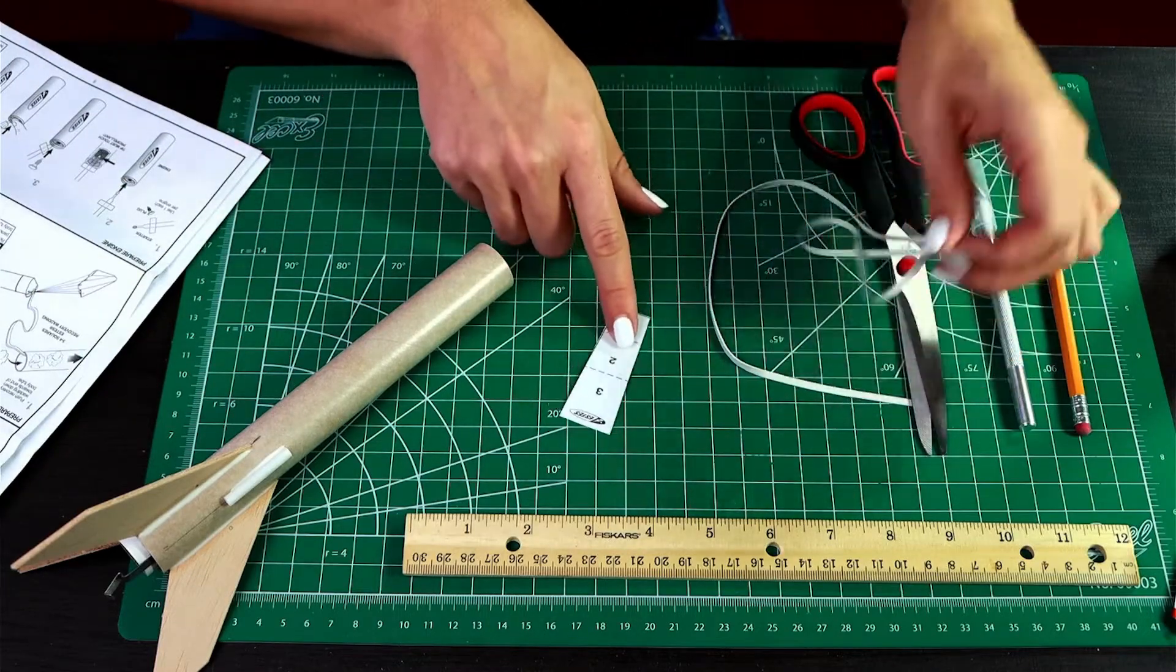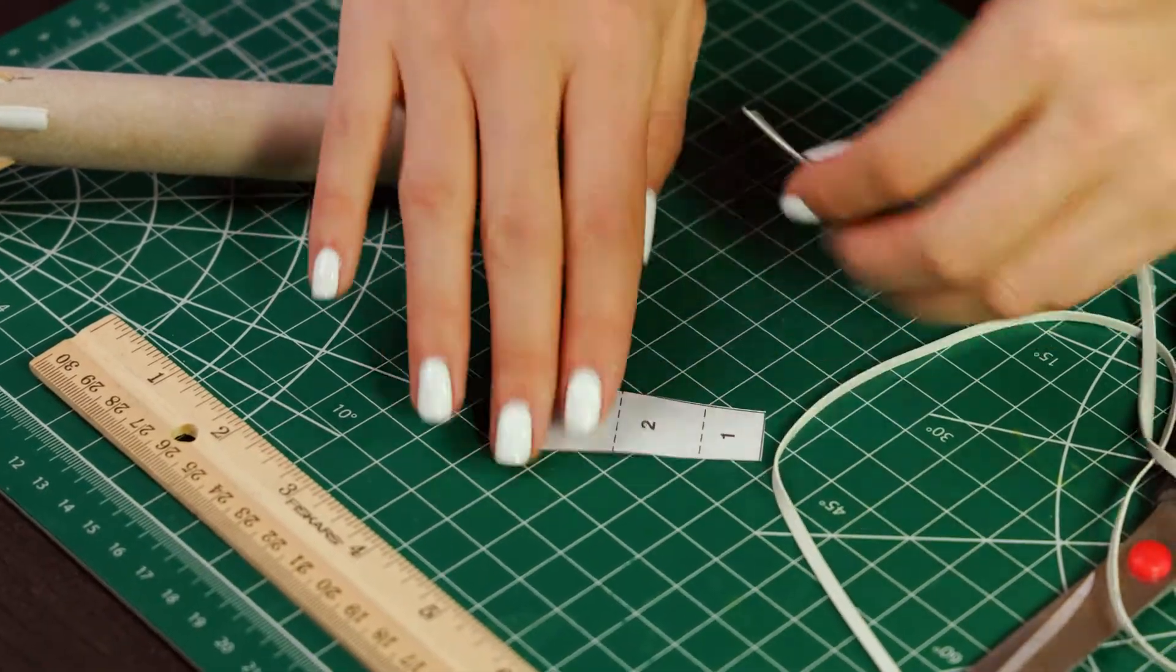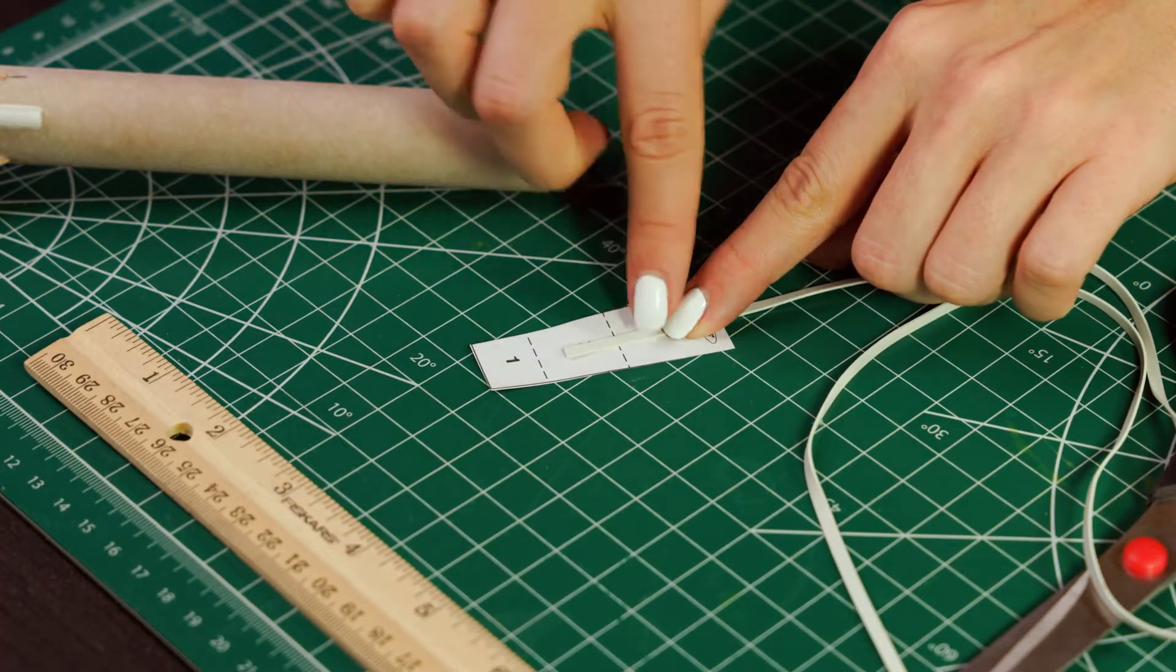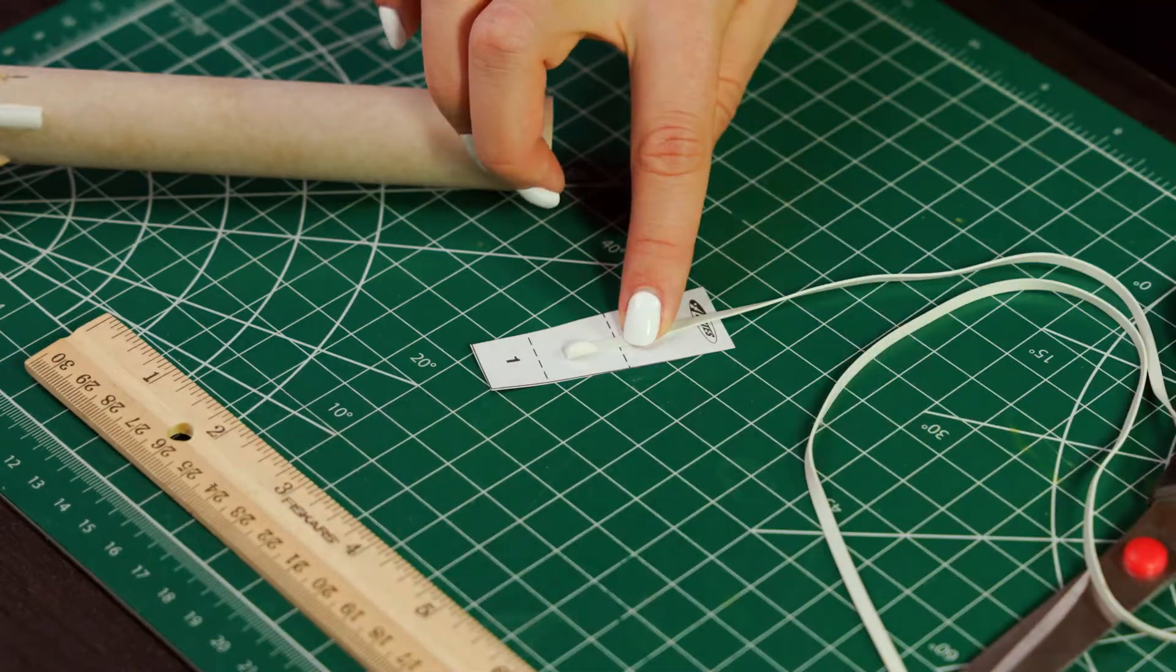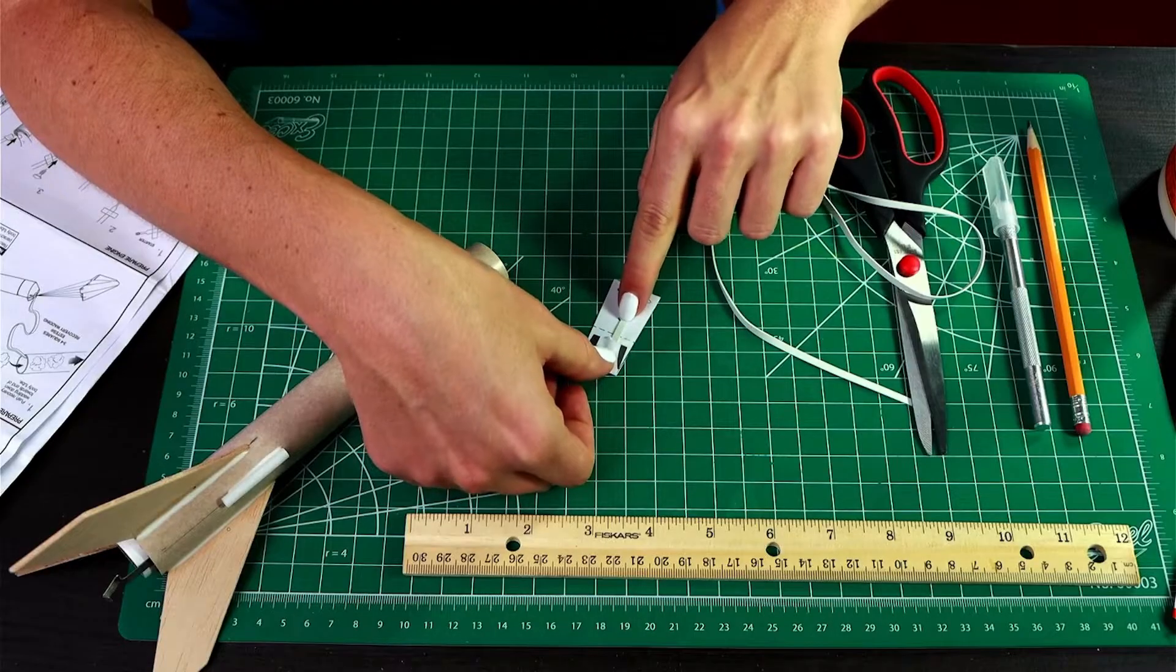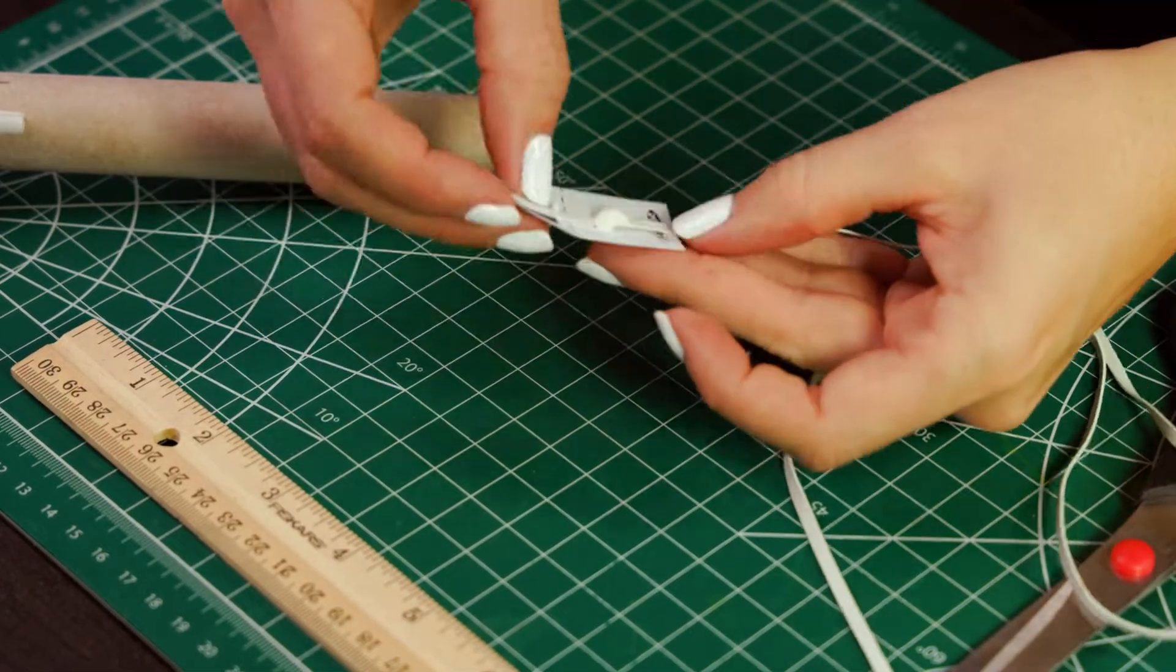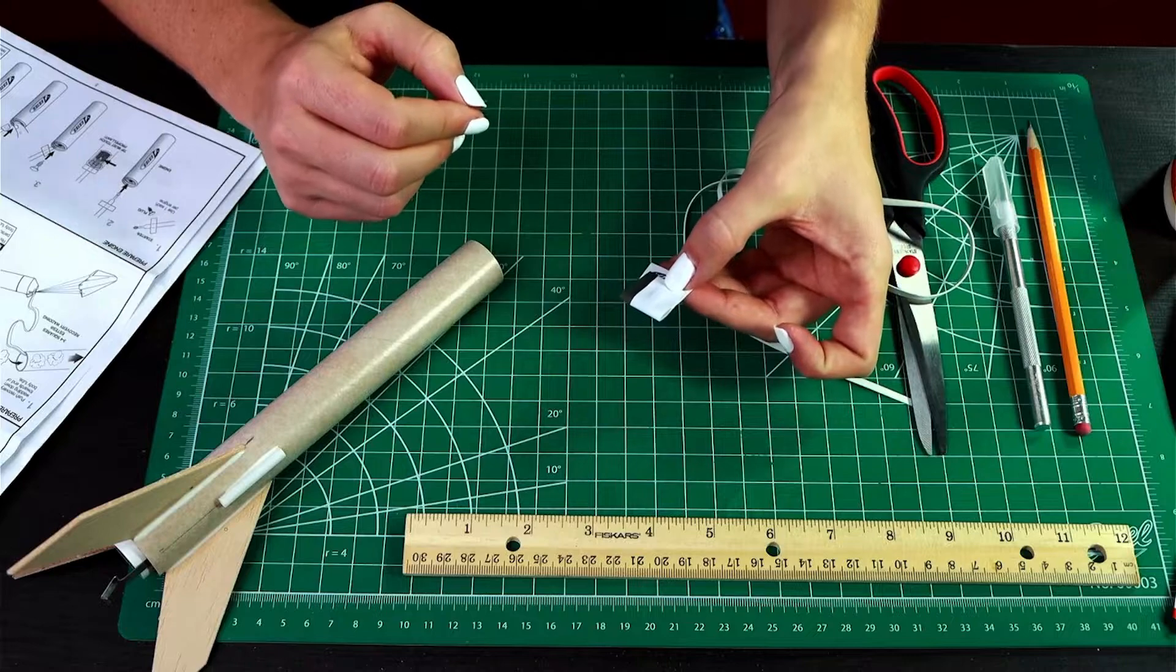Okay, so then you're going to take your little shock cord mount and one end of your shock cord and put some glue on it, and put the shock cord at number two, and then you're going to fold the number one over it. Okay, hold that for a second, and then same thing—you're going to put glue on the number three and then fold the number two over. Then hold that for a minute until it sets.